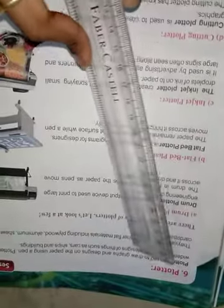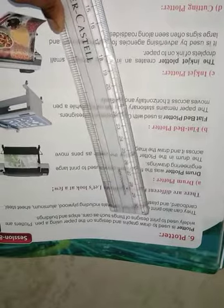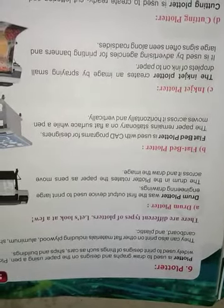Next, a plotter. A plotter is used to draw graphs and designs on the paper using a pen. Plotters are widely used to print designs of things such as cars, ships, and buildings. Architecture engineers use this — like when they draw a building's sketch that should look like a pen or pencil drawing, they use plotters.